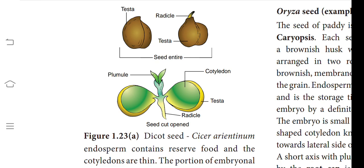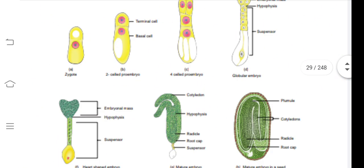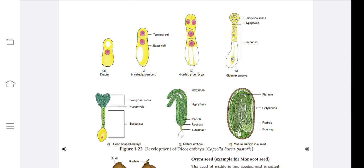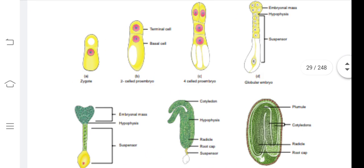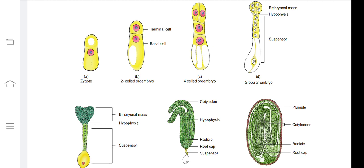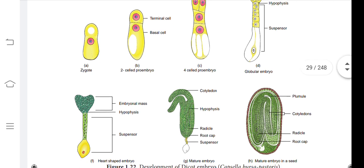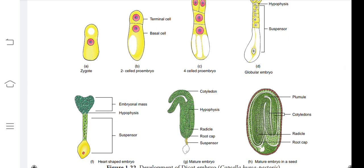This is most important — Figure 1.22, the development of dicot embryo. All the stages — (a) zygote, (b) two-celled pro-embryo — this diagram alone will be asked for five marks in your week test. Any one of the diagrams may be given to label the parts in your examination. These diagrams are most important; at least for one or two marks you will get this question, so you must draw all diagrams and label the parts.